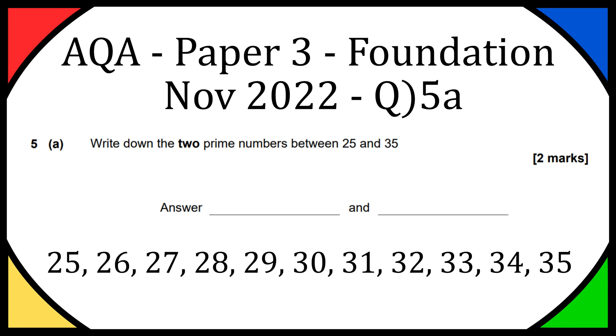So firstly let's write out 25 to 35 as whole numbers. From the phrasing of the question it seems like they don't want 25 and 35 but let's include them anyway because they're going to get cancelled out because they're not prime numbers.